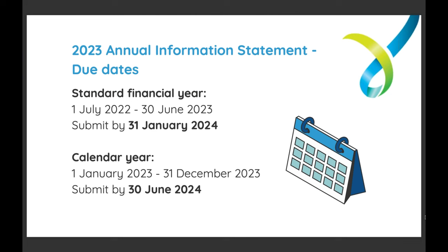Many charities will be due to submit their AIS pretty soon. If you're reporting for a standard financial year — 1 July 2022 to 30 June 2023 — your Annual Information Statement will be due by 31 January 2024. It's a great idea to submit sooner rather than later, so that if you need extra help completing the AIS, you have time to contact the ACNC, your accountant, or other people who work with the charity.